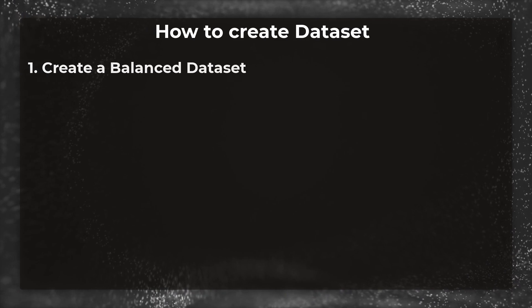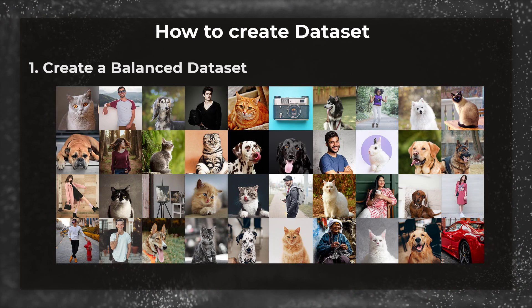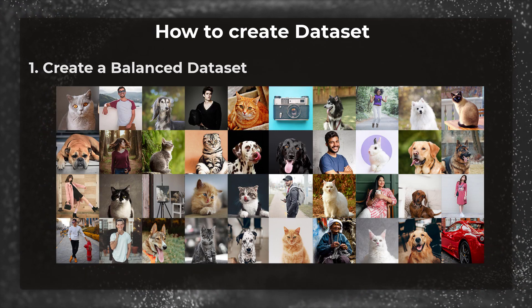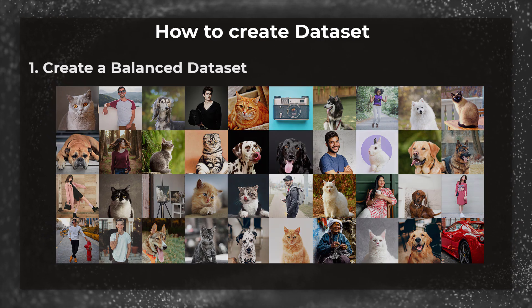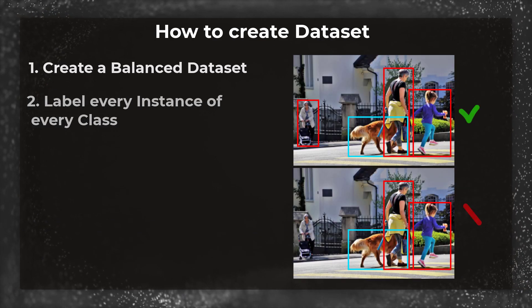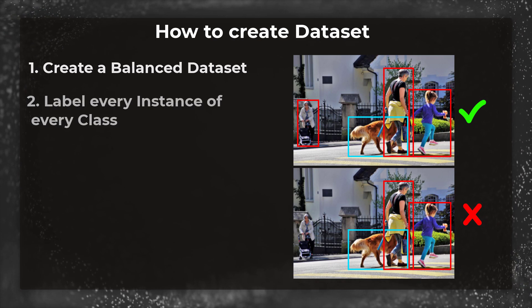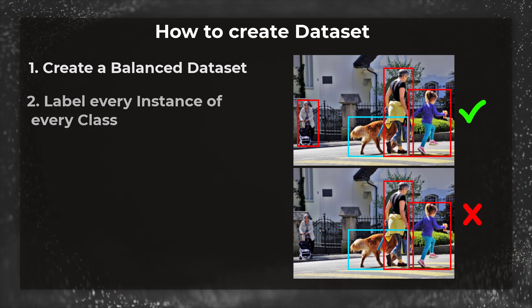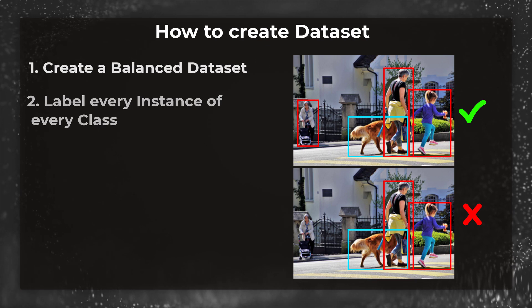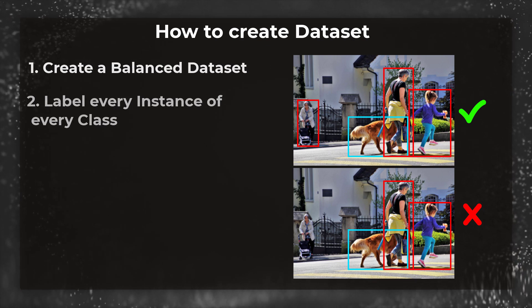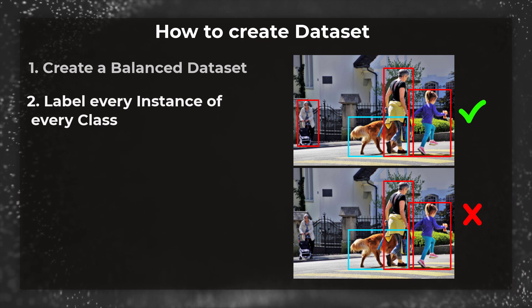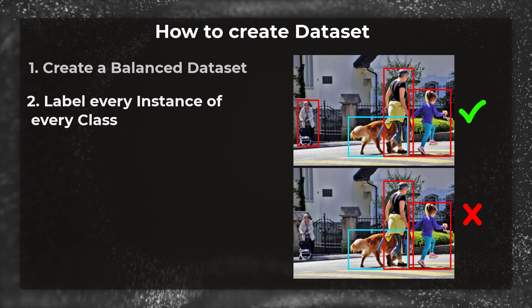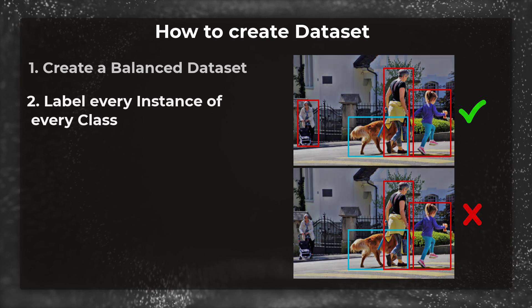While creating this dataset, make sure of the following things. First, try to make the dataset balanced — you should not have 1000 images of cats and just 20 images of dogs. Second, label every instance of every class in the image. So if there is a cat, a dog, or a person in the image, you have to find the bounding boxes for all of them in the ground truth metadata file. If you miss any, your detector will perform very poorly.